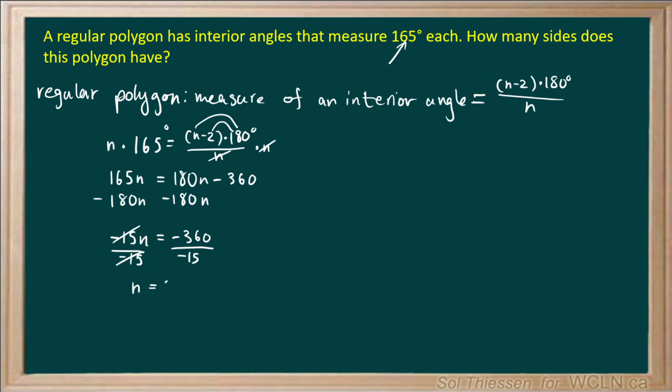Which is equal to positive 24. So the number of sides that this regular polygon has, given that each individual interior angle measures 165 degrees, is 24.